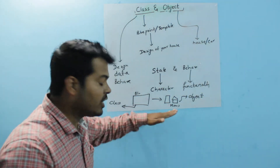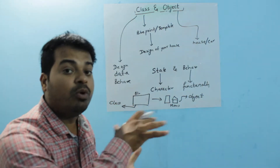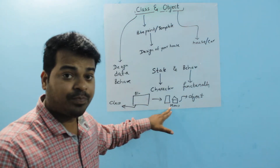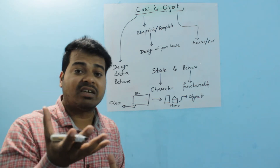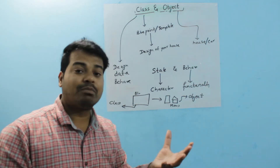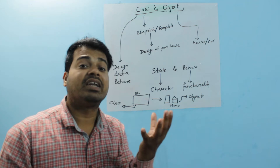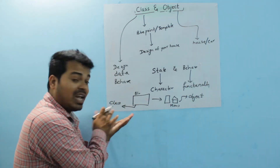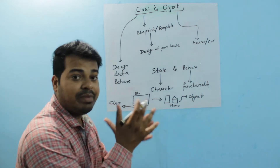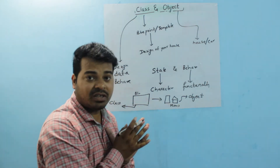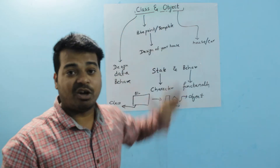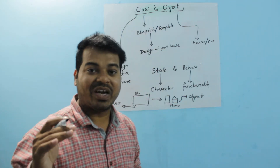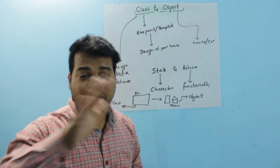Whenever you construct a house, the design or blueprint is your class and the house you make is your object. Similarly, when a company develops a car, the design of the car is your class and the final car they make is your object. I hope class and object in Java is now clear. Now let's go ahead and write a first program in Java.